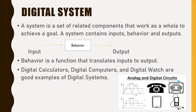A digital system is a system in which signals have a finite number of discrete values. An analog system has values from a continuous set, and a mixed signal system has both digital and analog parts. Now I would like to tell you some of the uses and examples of digital systems.